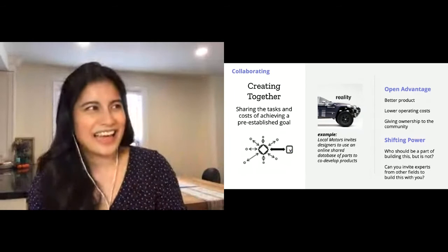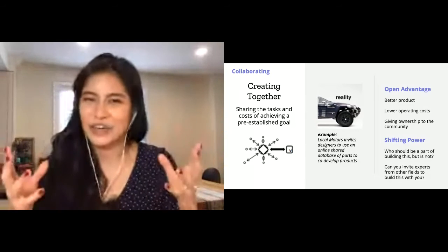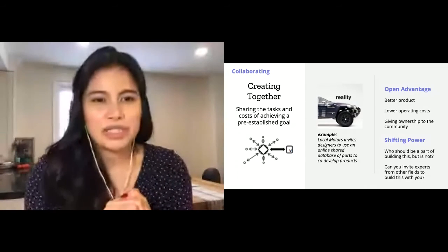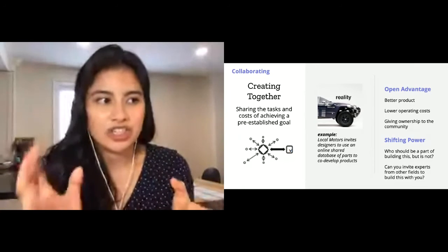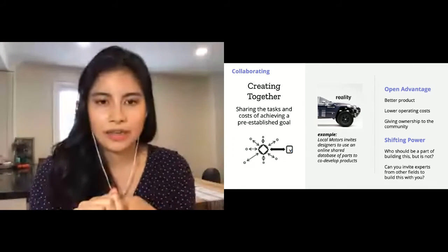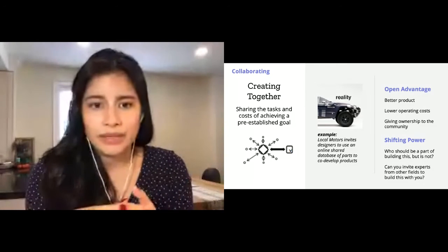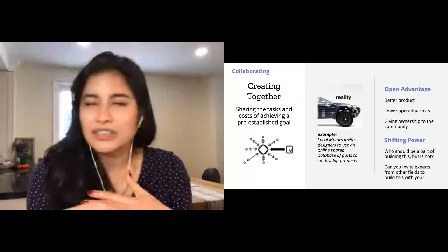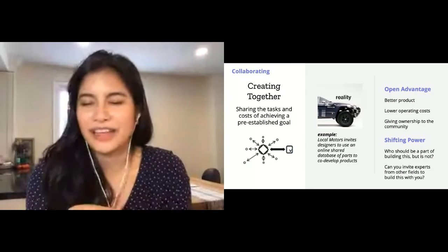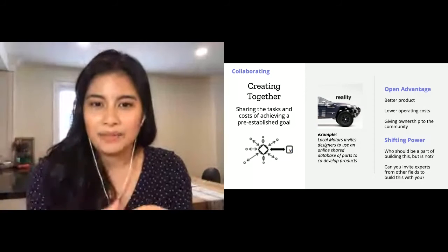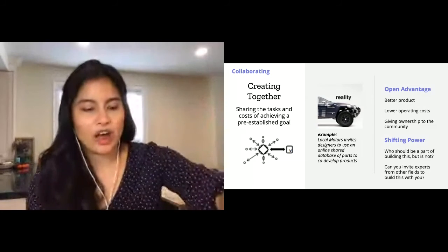The last two are around collaborating in two different ways. You can collaborate with others. First is creating together, which is like classic open source—creating with a group. Share the tasks and costs of achieving a pre-established goal. The example they have is Local Motors, which invites designers to use an online shared database of parts to co-develop products. I'm sure many of you have seen with the different open source projects you're running that you have a better product in the end, you lower operating costs, and you give ownership to the community. I think even just watching how BOSC runs, or BCC entirely, you have so many volunteers working on this together, and the community really feels like they own it because you have so much community running it.